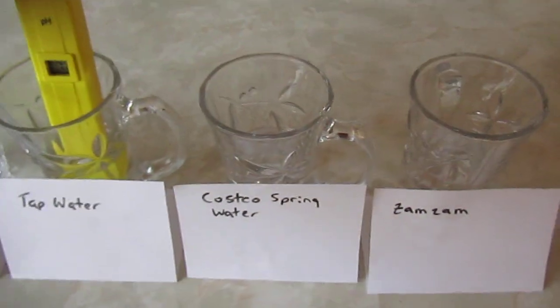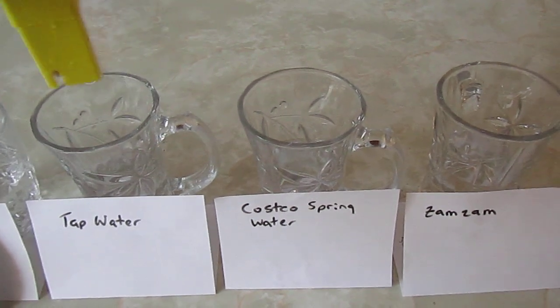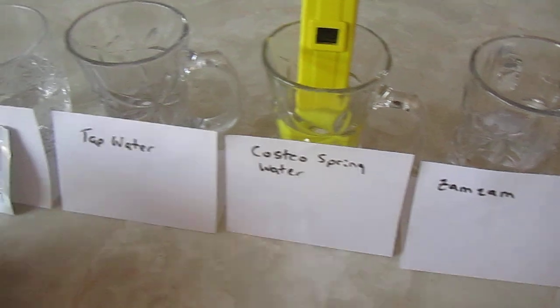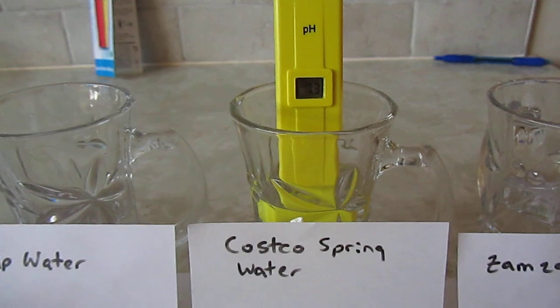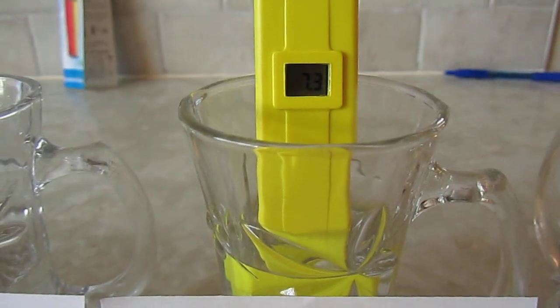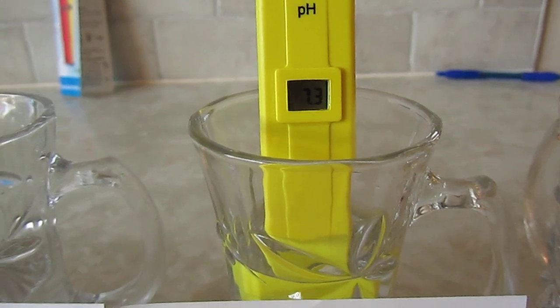Alright, here we got some Costco spring water. So Costco spring water I think it's around 7.3, it was 7.2 last time I did it.